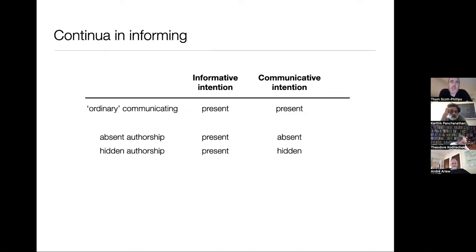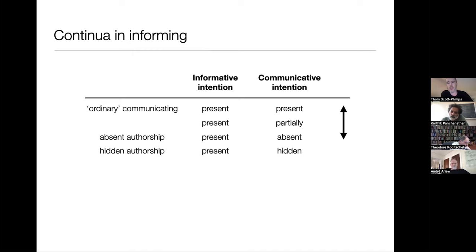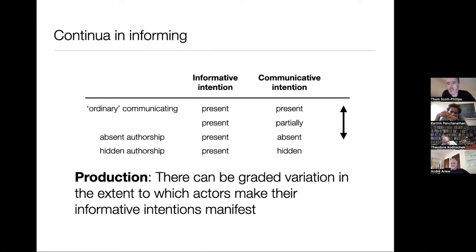Now I'm going to push that point further in order to motivate the continua I mentioned and make some sense of the behavioral diversity. On the production side of things, we have ordinary communicating, absent authorship, and hidden authorship. There are very plausibly cases in between, where there is still an informative intention, but the communicative aspect is only partially there — you make it somewhat manifest that you have an informative intention, maybe not fully overtly as in language use or overt points, but nor are you particularly hiding it. Not only can there be these partial cases, but the distinction between the absent case and ordinary communication is not a categorical distinction — it's a continuum. There can be graded variation in the extent to which actors make their informative intentions manifest.